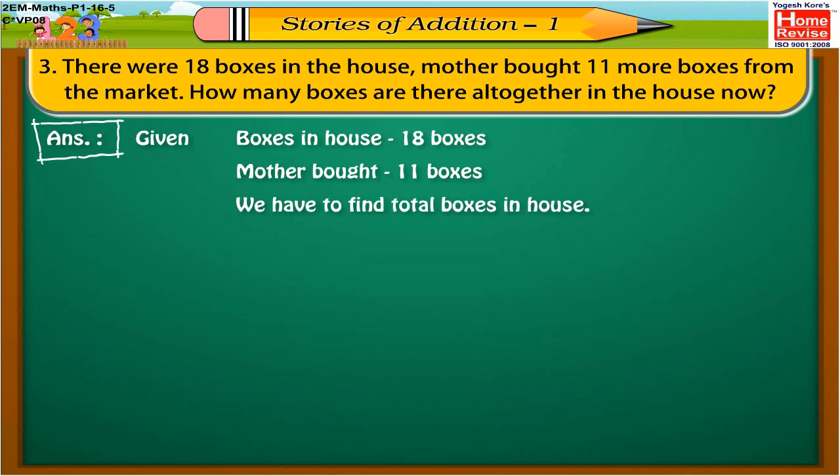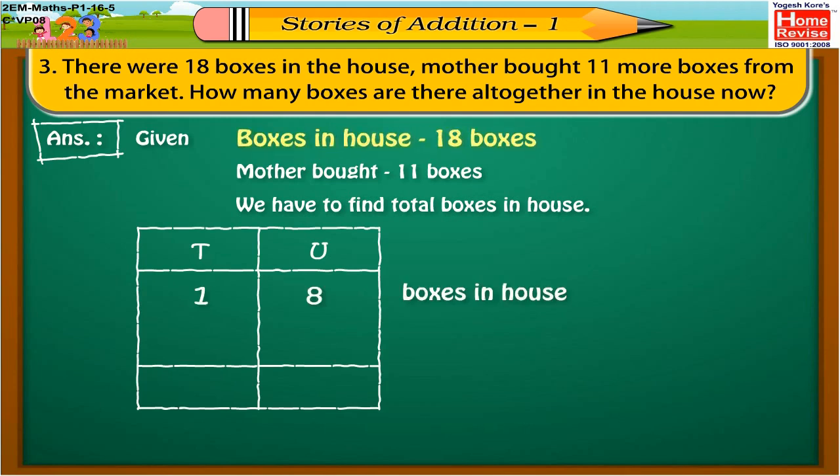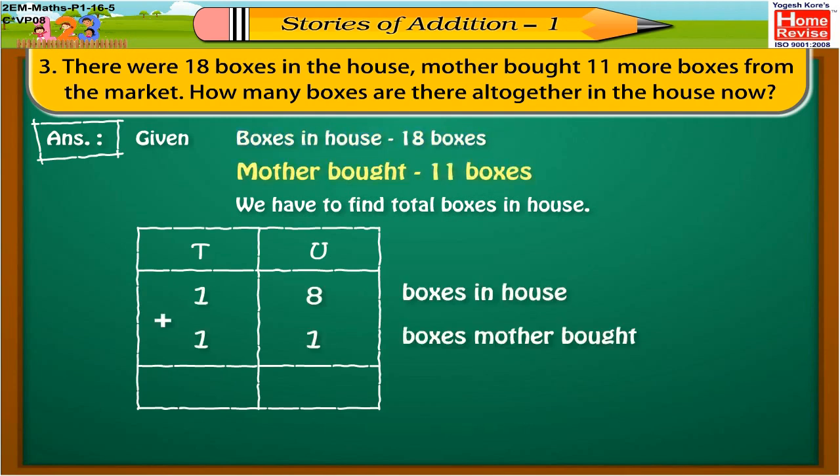For that, we have to add boxes in the house and the boxes that mother bought. 18 boxes in house plus 11 boxes mother bought. So we have to find the total boxes.